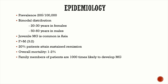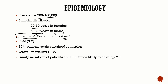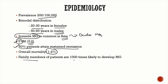Epidemiology: prevalence is around 200 per 100,000 population with a bimodal distribution. Early-onset MG occurs at 20–30 years and is more common in females; late-onset at 50–60 years is more common in males. Juvenile MG and ocular MG are both more common in the Asian population. As an autoimmune disorder, it is more common in females at a 3:2 ratio. Twenty percent of patients attain sustained remission, and mortality with modern treatment is only 1–2%. Family members of patients are 1,000 times more likely to develop MG.